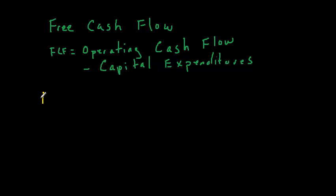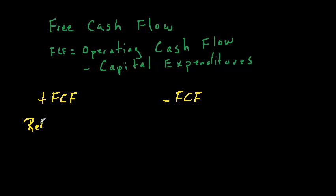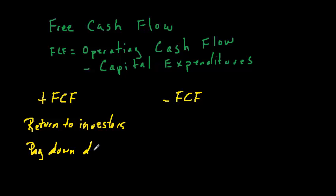Let's create two columns: an airline with positive free cash flow and an airline with negative free cash flow. What are some things airlines do in these situations? If an airline has positive free cash flow, it can return some of that cash to its investors, and it can also pay down debt — rewarding investors and shoring up the balance sheet.